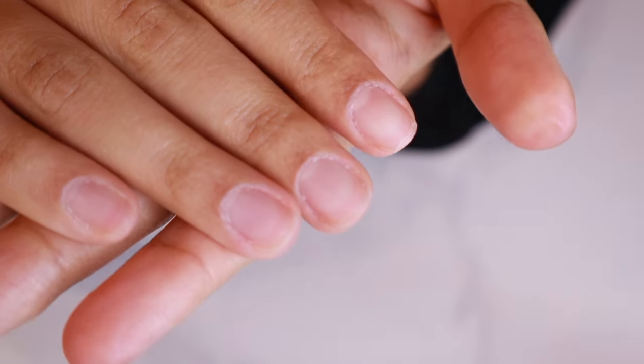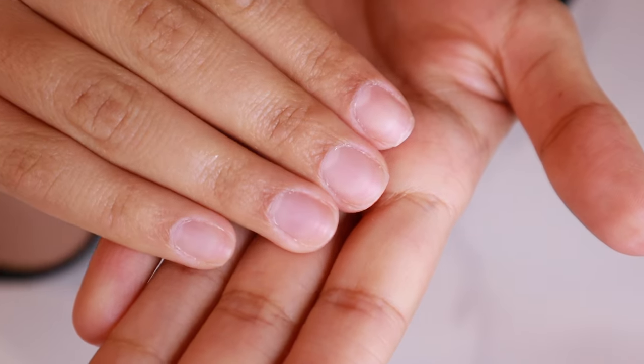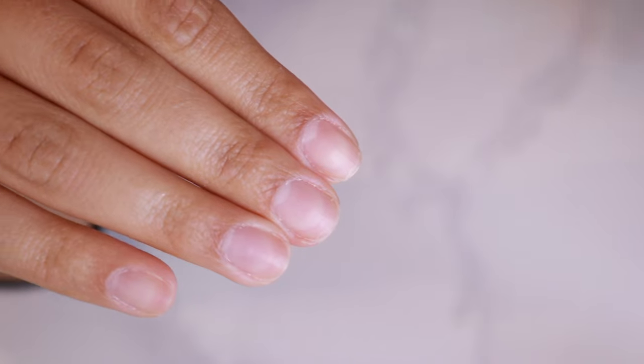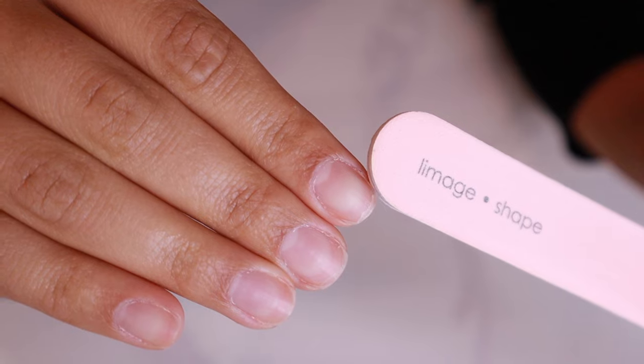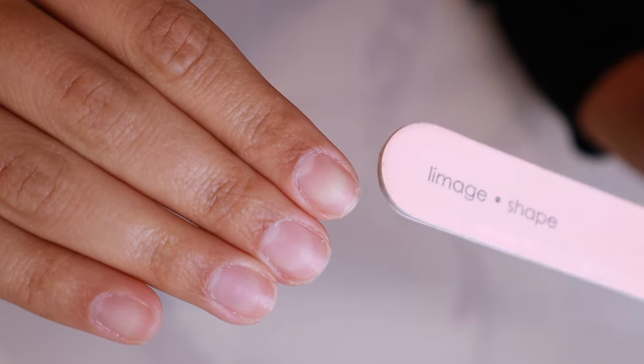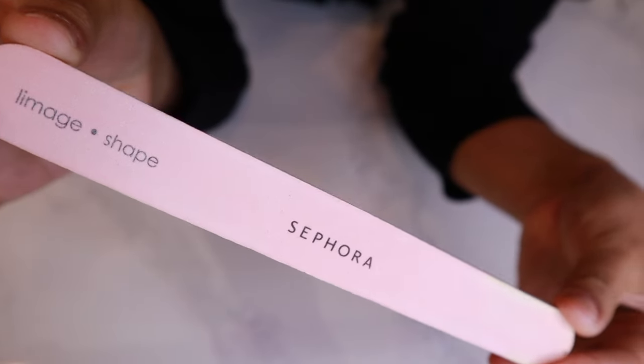First things first, take a very good look at your nails, and this is probably the best piece of advice I've heard: you're going to shape your free edge the same shape as your cuticle. As you can see here, I have a rounded cuticle, so I'm going to round my nails to elongate and make my nail bed look longer. To file my nails, I'm going to be using this file that I got from Sephora.